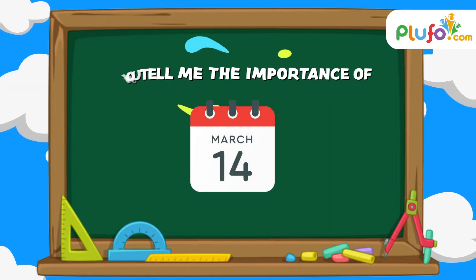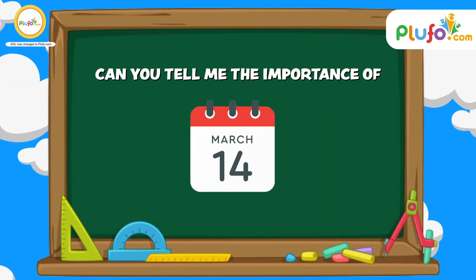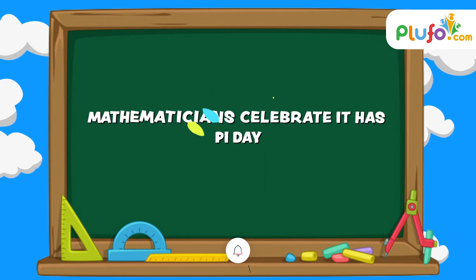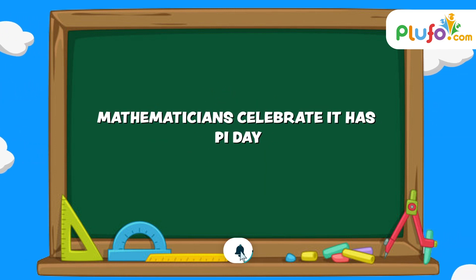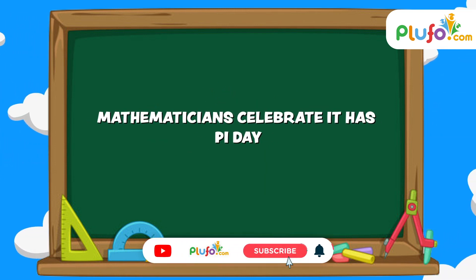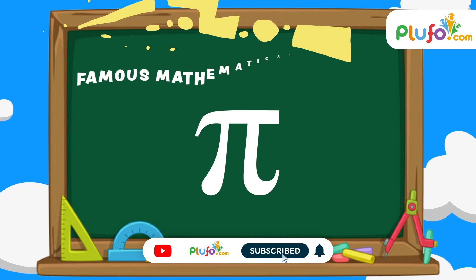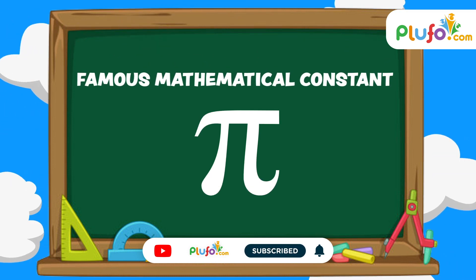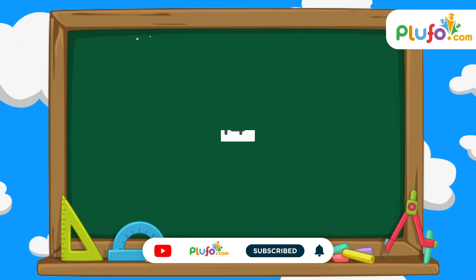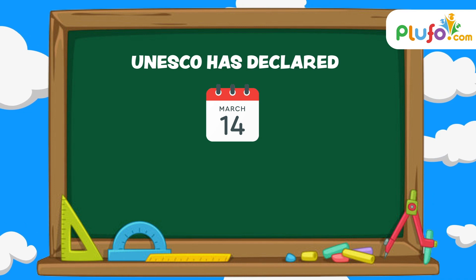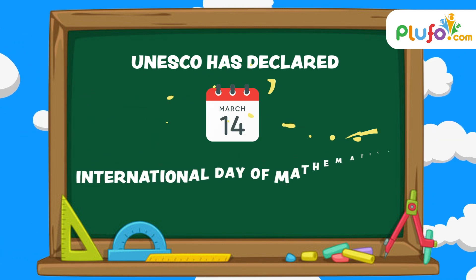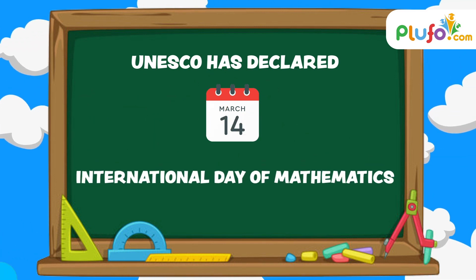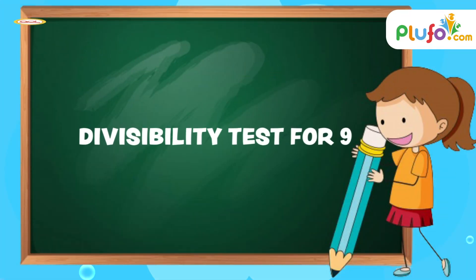Can you tell me the importance of March 14? Well, mathematicians celebrate it as Pi Day to celebrate the famous mathematical constant pi, and UNESCO has declared March 14 as International Day of Mathematics.